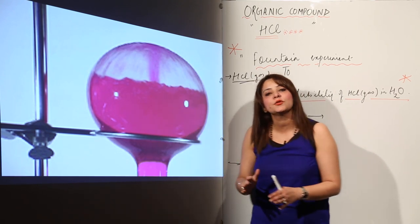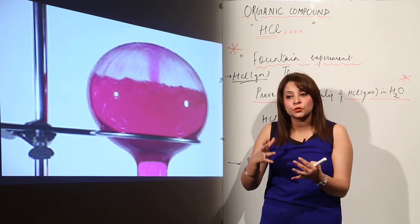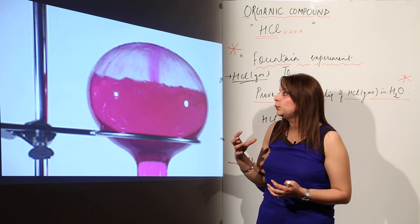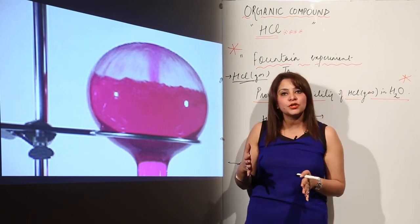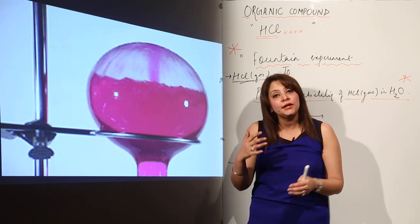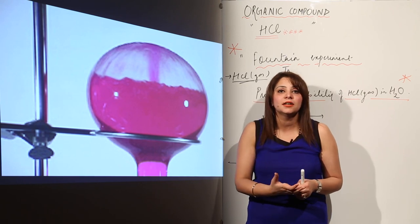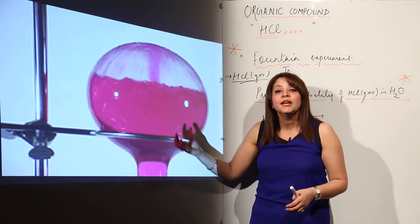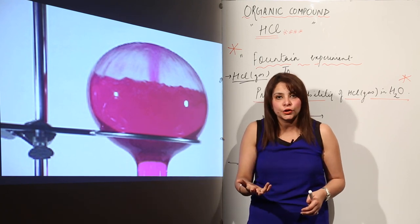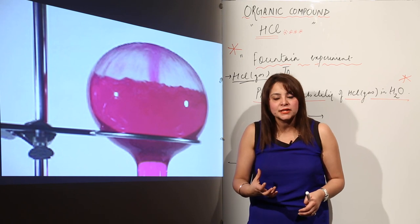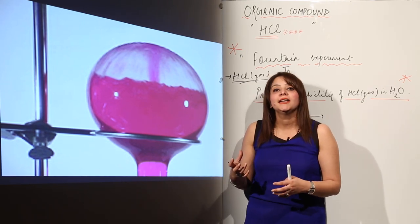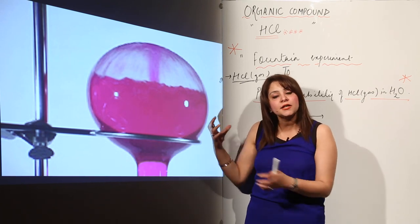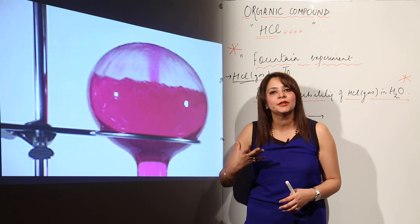This fountain experiment proves two things: first, that HCl gas is highly soluble in water; and second, that HCl is an acid, which turns blue litmus red. It is important to note that dry HCl gas is not acidic in nature, and even liquefied HCl cannot change blue litmus to red. Only moist HCl — HCl dissolved in water — shows acidic nature, turning blue litmus red. Due to the great atmospheric pressure outside and less pressure inside, the solution comes out as a beautifully colored red fountain.